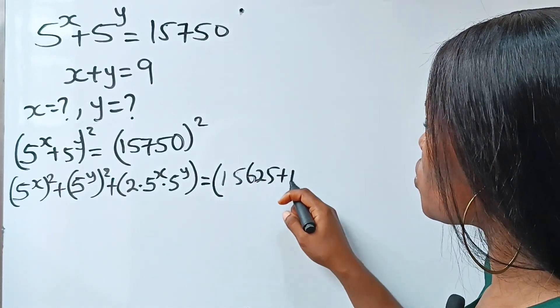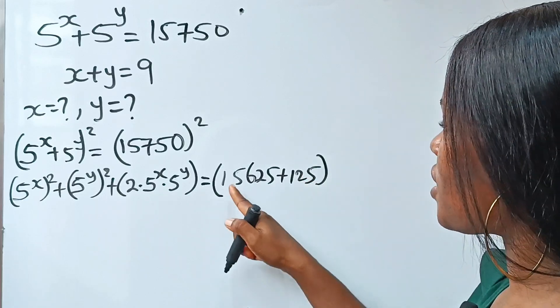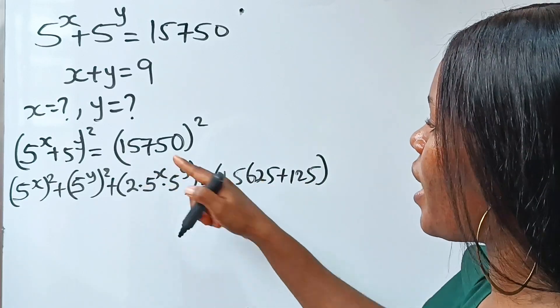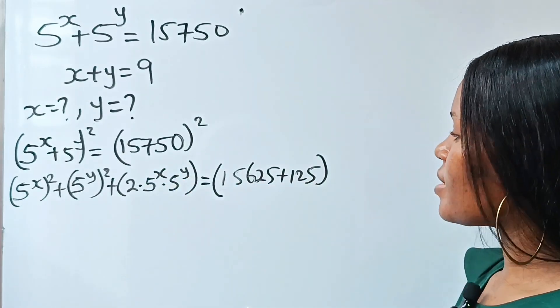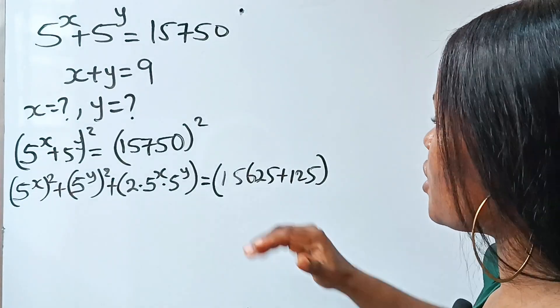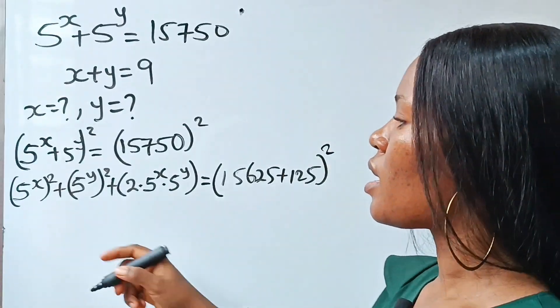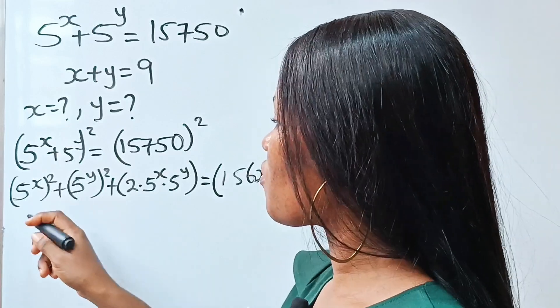Now 15750 can be expressed as 15625 plus 125. If you add these together you get 15750. Everything squared — let's keep going.